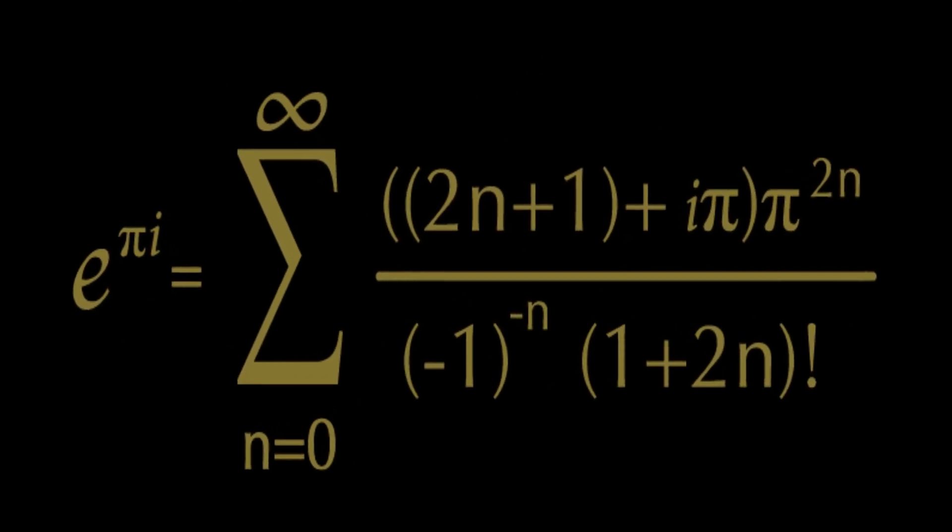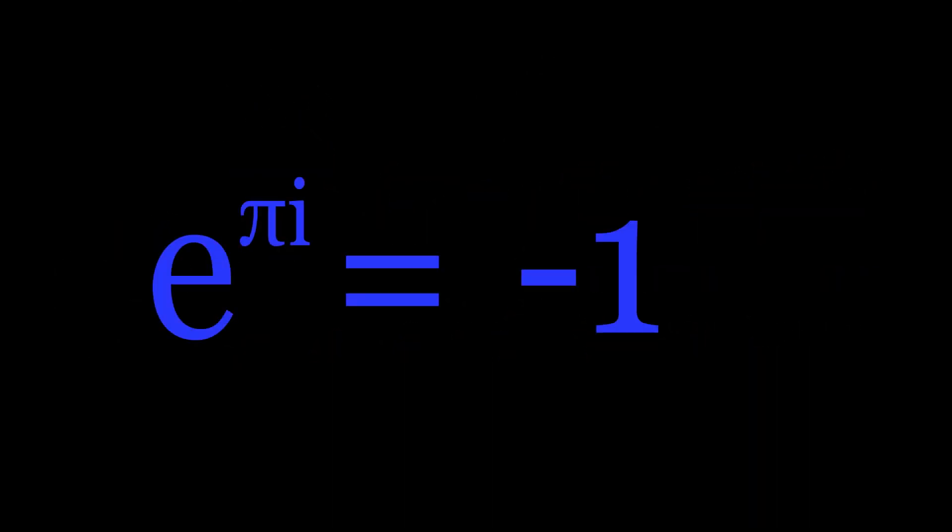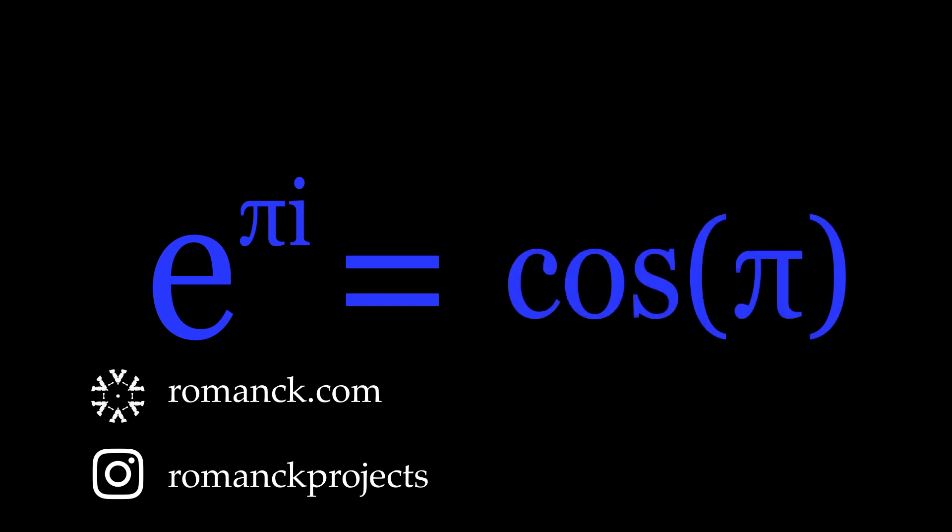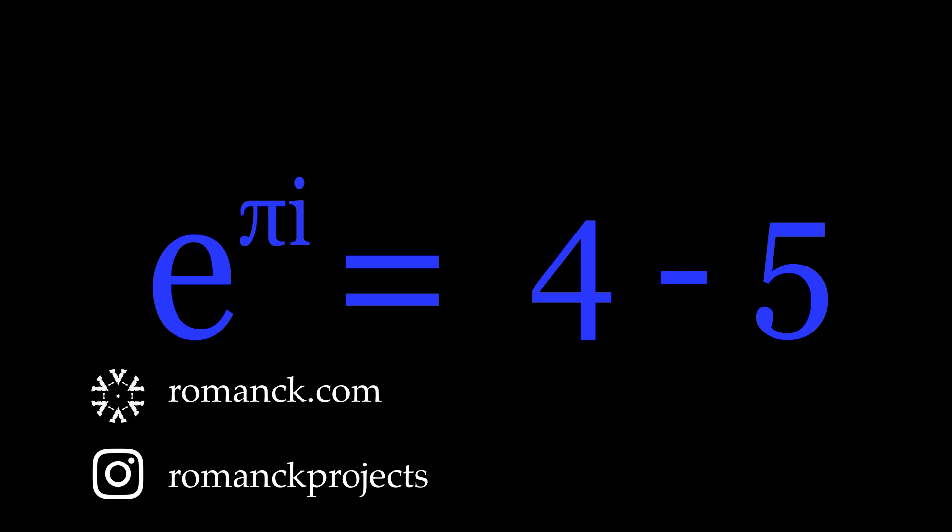I don't know. I just know it works. So there you go. E to the pi i equals negative one. Looks fancy. You can use it instead of a negative to make your equations all that much more intimidating.